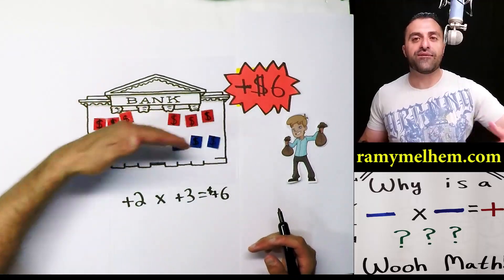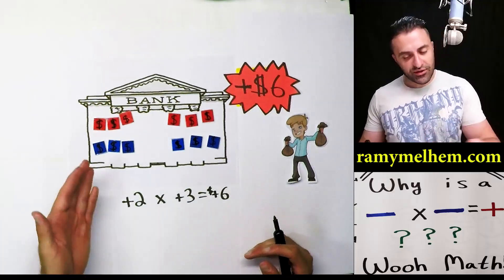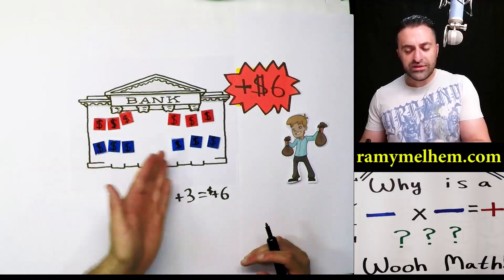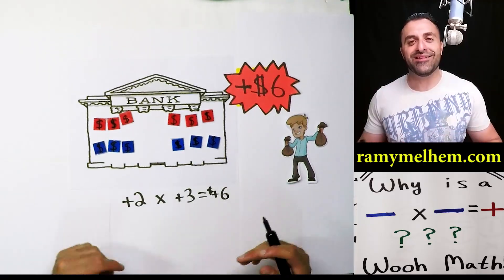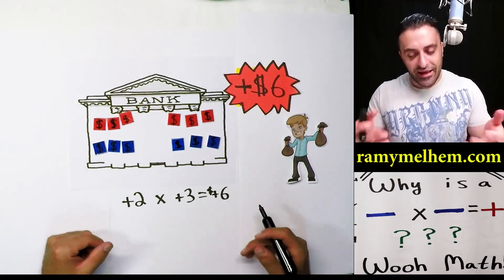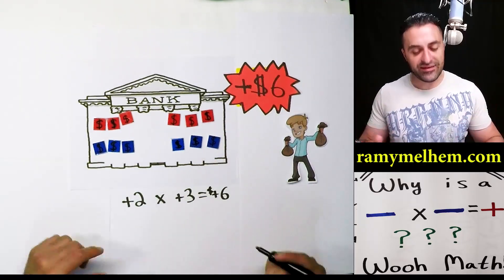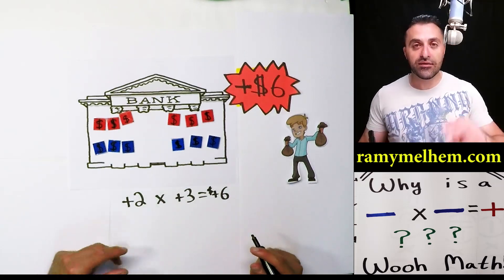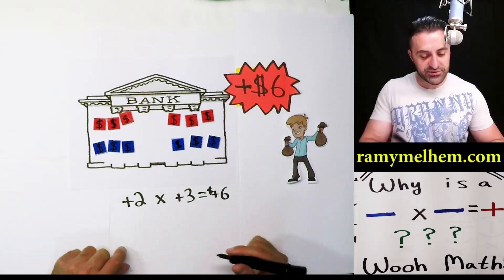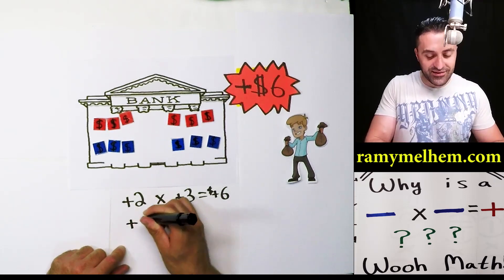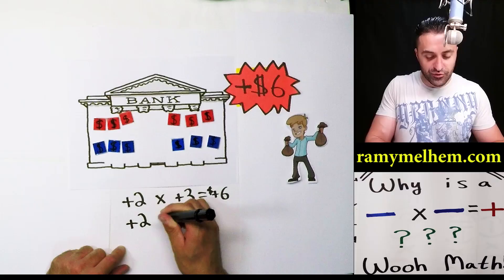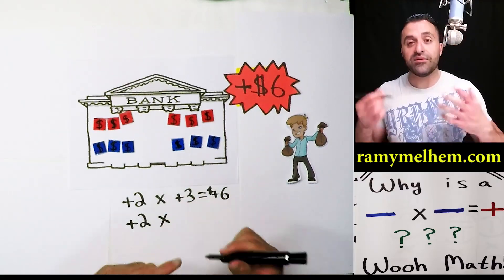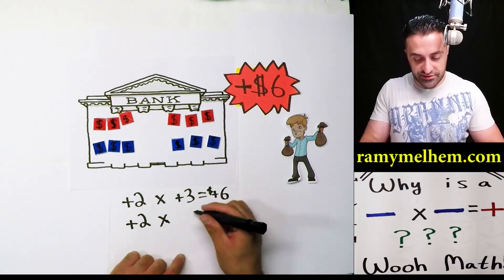We're going to ignore the red chips for a minute and just look at the blue. What's the equation here — what have we added? We've added a loan, a debt. We've added two groups of debt. So now we've added two groups of negative $3.